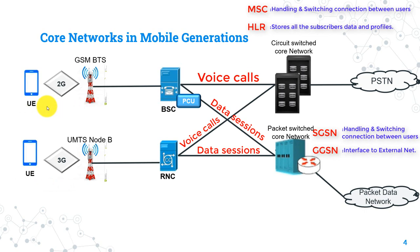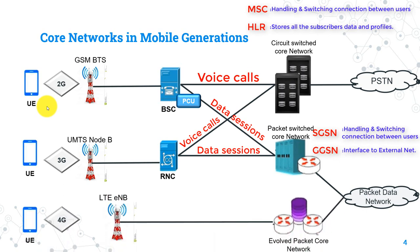Now let's talk about 4G networks. 4G uses a totally new core network called EPC, which stands for Evolved Packet Core. Its main function is to provide 4G subscribers with access to external packet data networks like the internet, so its function is the same as that of packet switching.